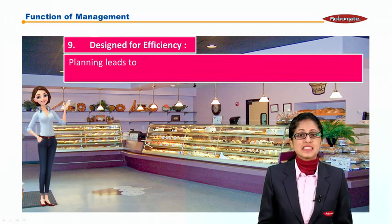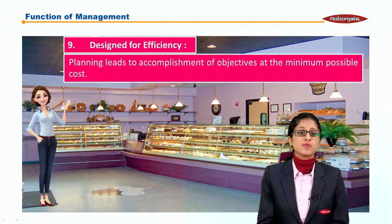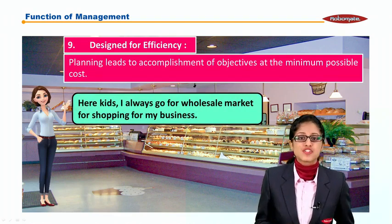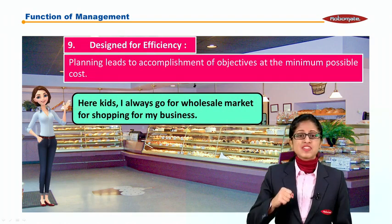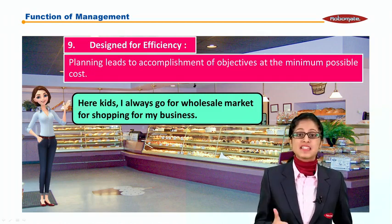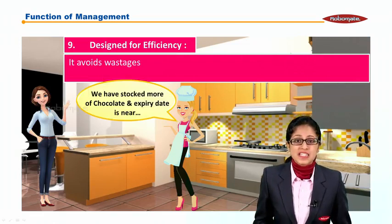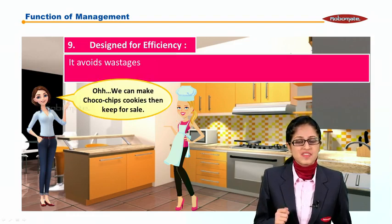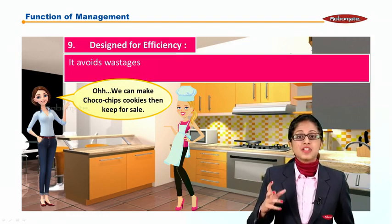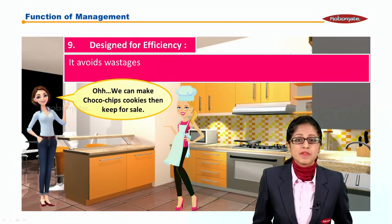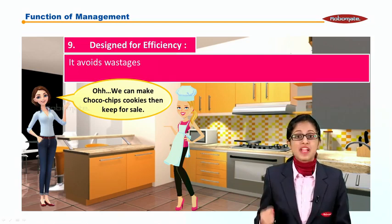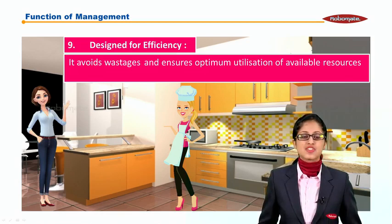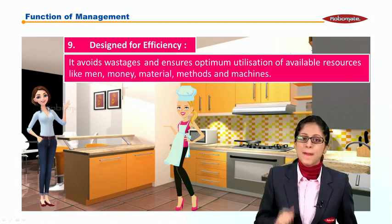The ninth point says planning is designed for efficiency. Planning leads to accomplishment of objectives at the minimum possible cost. Annie says: 'Kids, I always go for the wholesale market for shopping for my business' — efficiency at minimum cost. It also avoids wastage. The kitchen girl says: 'We have stocked more chocolate and the expiry date is near.' Annie concludes: 'We can make chocolate cookies and keep them for sale.' It avoids wastage and ensures optimum utilization of available resources like men, money, material, method, and machine.